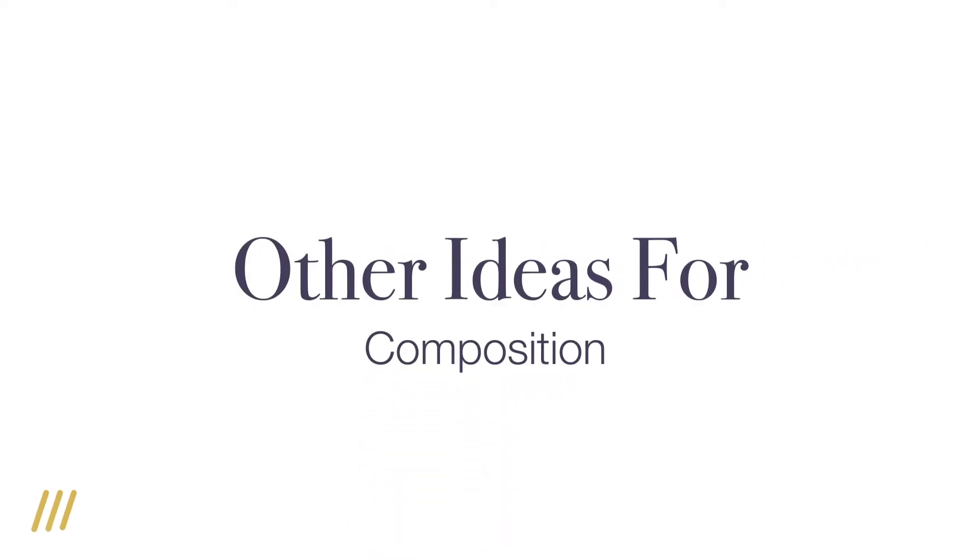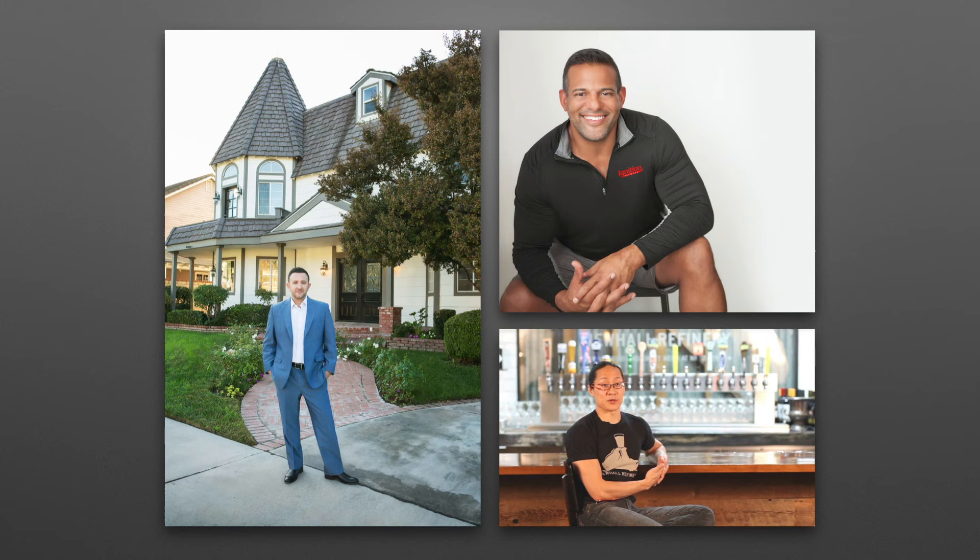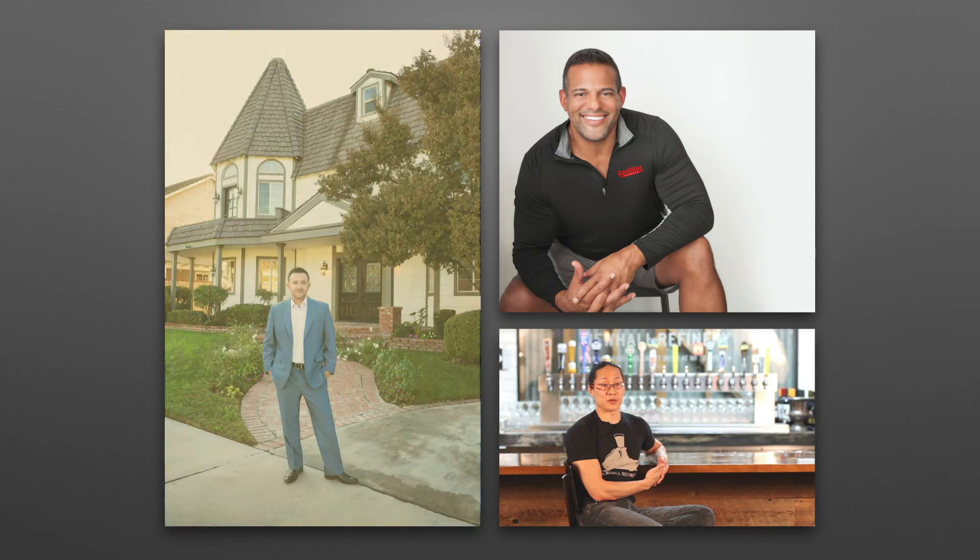We also wanted to show you a couple of other ideas for composition depending on what your business is. You can see real estate agent Ryan Arditti on the left of the screen — we did a photo series for him at a house he was actually trying to sell at the time. It's a beautiful composition: you can see the house in the background, his posing looks really good, but he's also showing off the house. He wasn't the only feature in the shot; the house was also very important.